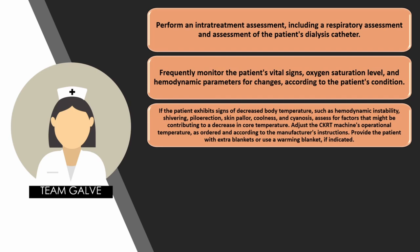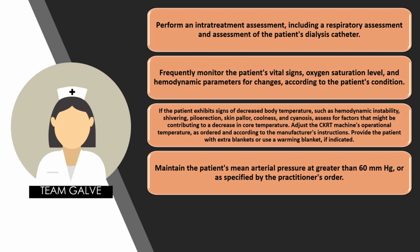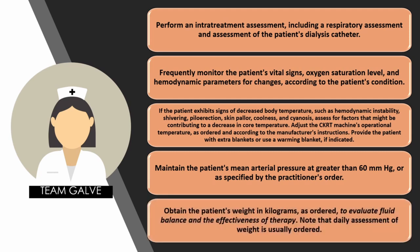Know when to kink, when not to kink, when to apply a clamp. Ask questions — it is okay to ask intelligent questions and ask for help. Maintain the patient's mean arterial pressure at greater than 60 mmHg, or as specified by the practitioner's order. Obtain the patient's weight in kilograms as ordered to evaluate fluid balance and the effectiveness of therapy. Note that daily weight assessment is usually ordered.